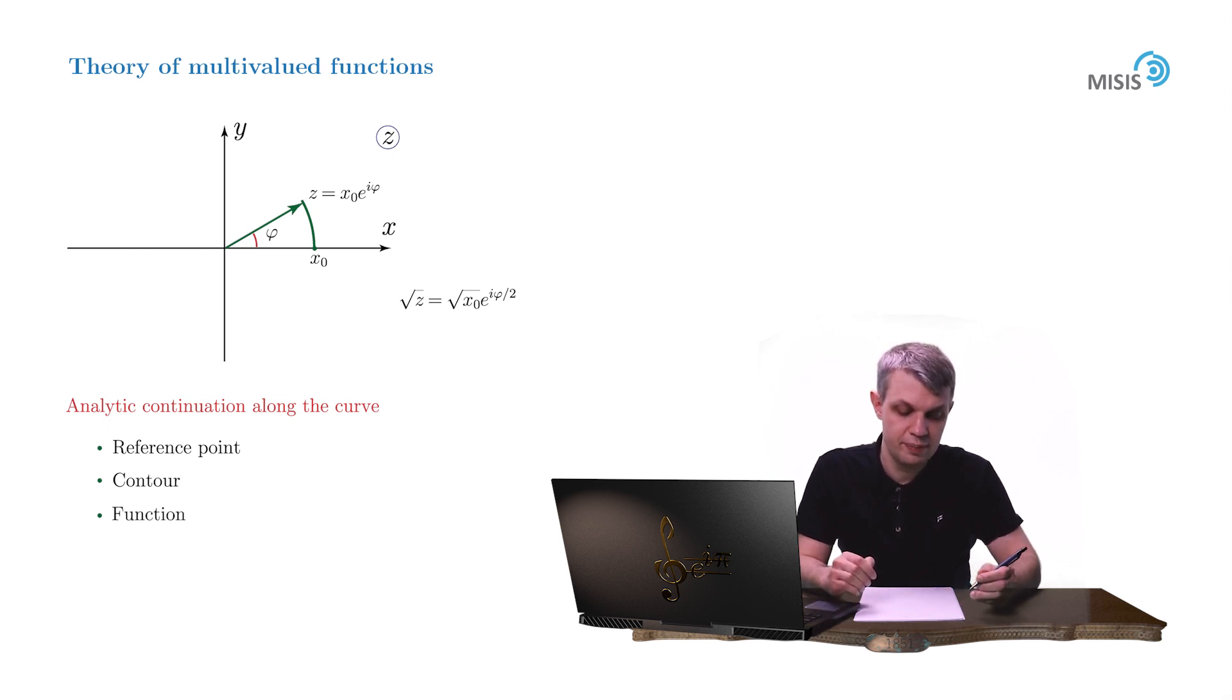Once we've agreed to take an arithmetic value for the square root of a real positive number, we managed to ascribe a single value to the square root of z as we move along the contour.